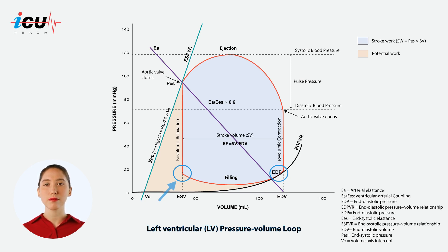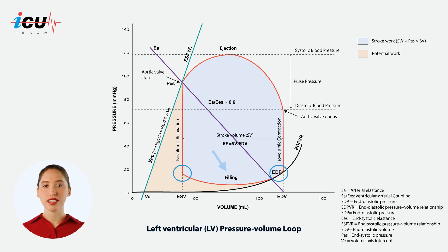Key events in this phase include the opening of the mitral valve, passive filling of the ventricle — initially rapid then slower — followed by atrial contraction and eventually the closure of the mitral valve.